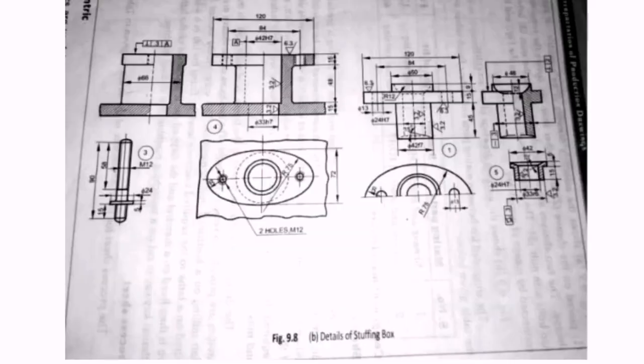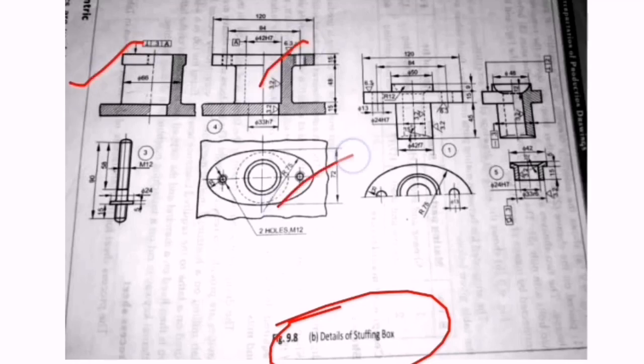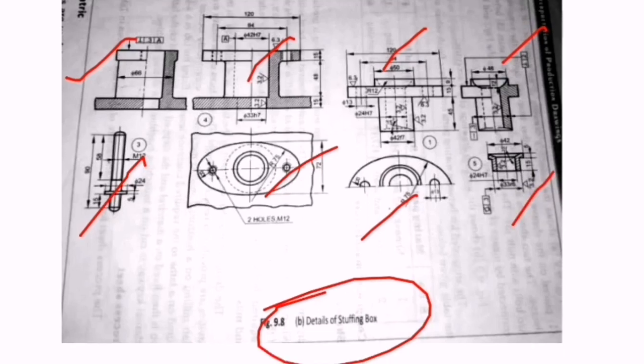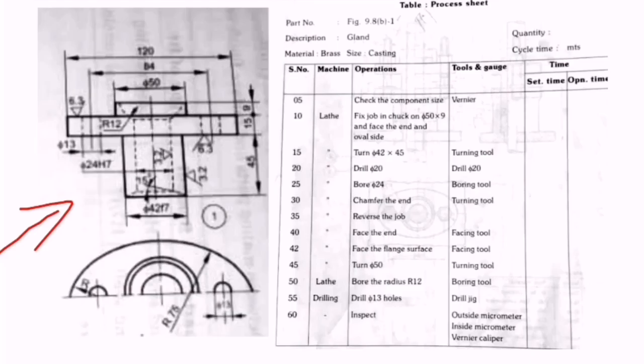This is the part drawing of a stuffing box. We can see different parts here - around five parts are shown in the part drawing. We are going to create the process sheet for this stuffing box.